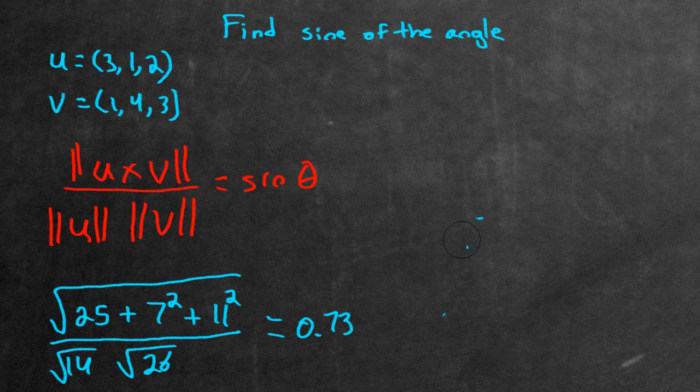Now, just for fun, let's see what kind of actual angle it is. To do this, we take the sine inverse, or the arc sine, of the value we just found, 0.73. So doing that, we get roughly 47 degrees. So that's it.